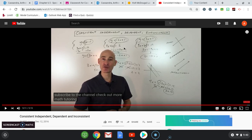Over here in the second example, when he tried to use the substitution method, the variable canceled out. When the variable cancels out and the left side equals the right side, that means it is consistent dependent — it is the same line. However, if you use the substitution or elimination method and the variable disappears and you end up with something that is not true, like 3 equals 12, you have parallel lines. The video did an excellent job of explaining examples with one solution, infinitely many solutions, and no solution.